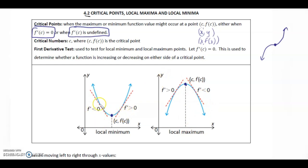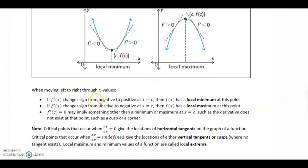Specifically in that order: decreasing then increasing gives a minimum; increasing then decreasing gives a maximum. When moving left to right through x values: if the derivative changes sign from negative to positive at that point, there's a minimum. If the derivative changes sign from positive to negative at that point, there's a local maximum. If the derivative equals 0, this may imply something other than a min or max, such as a cusp or a corner.